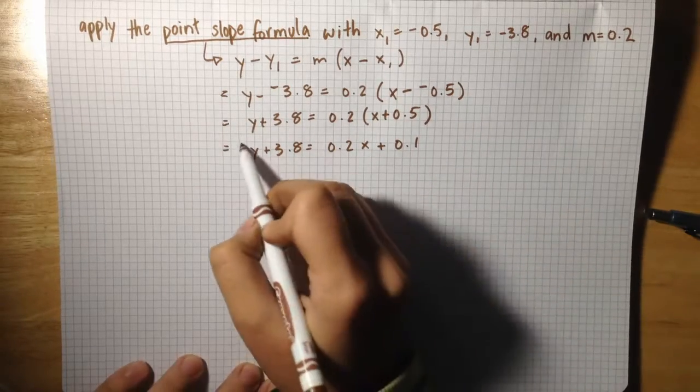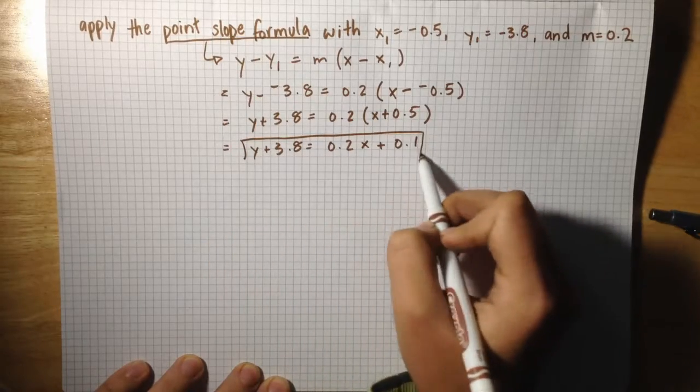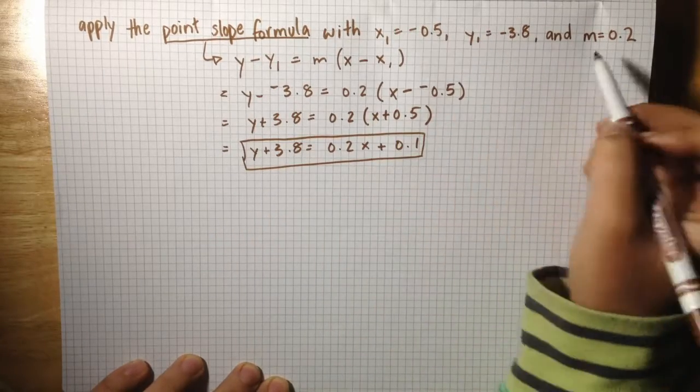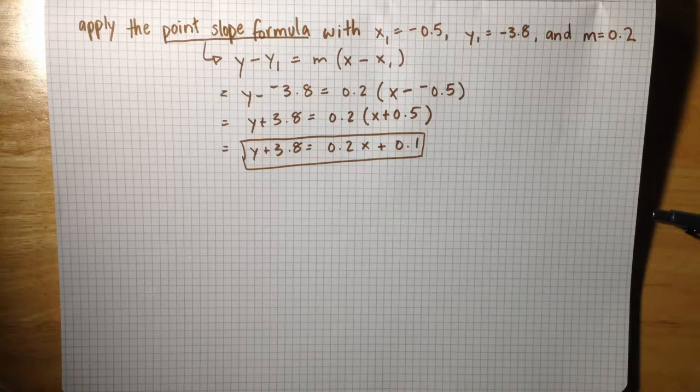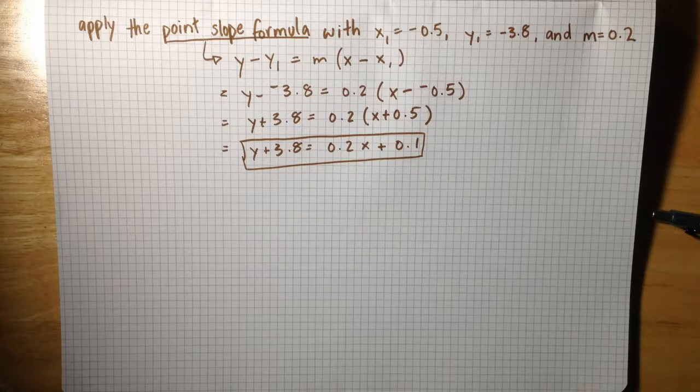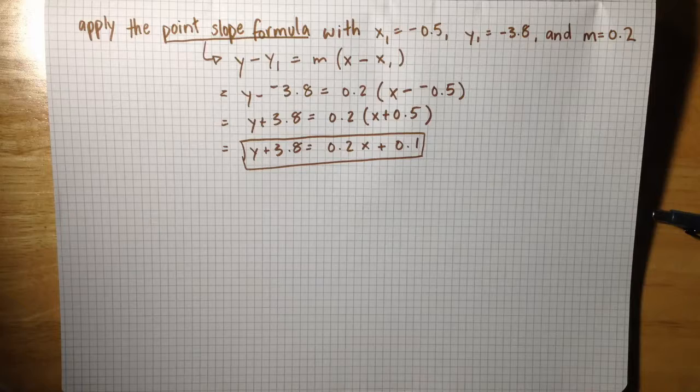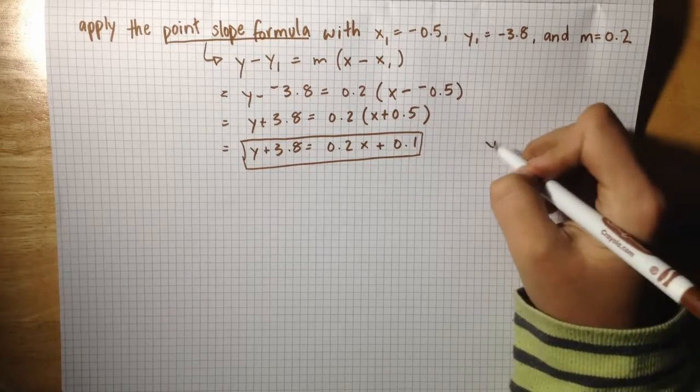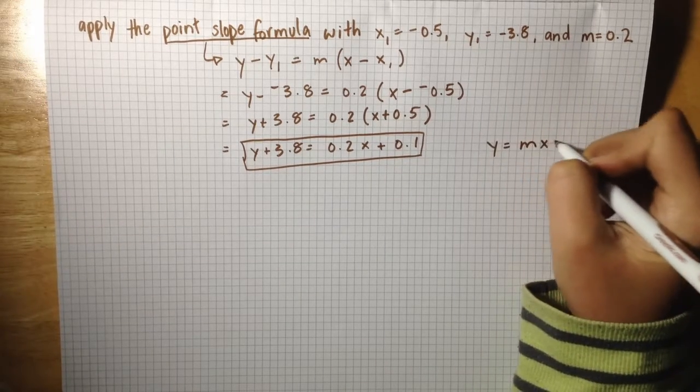This is how you would write these values in point-slope formula. If you wanted to change this into slope-intercept form, you would need to get it into y equals mx plus b.